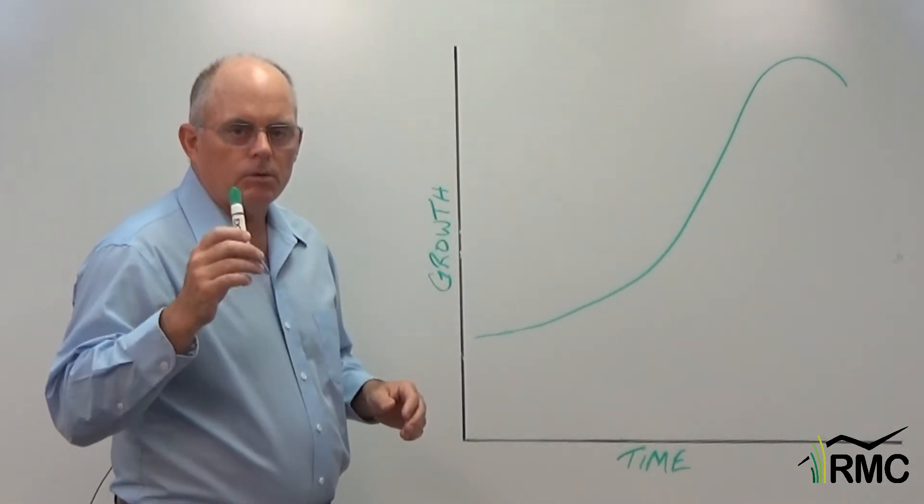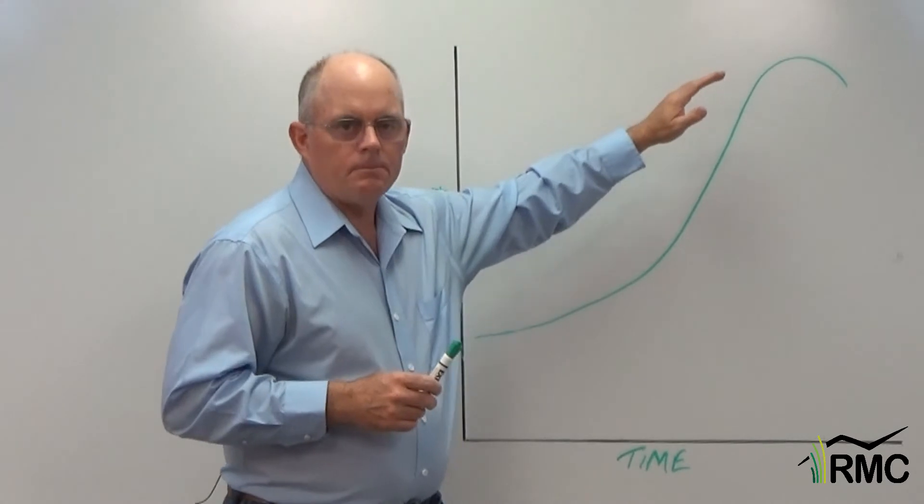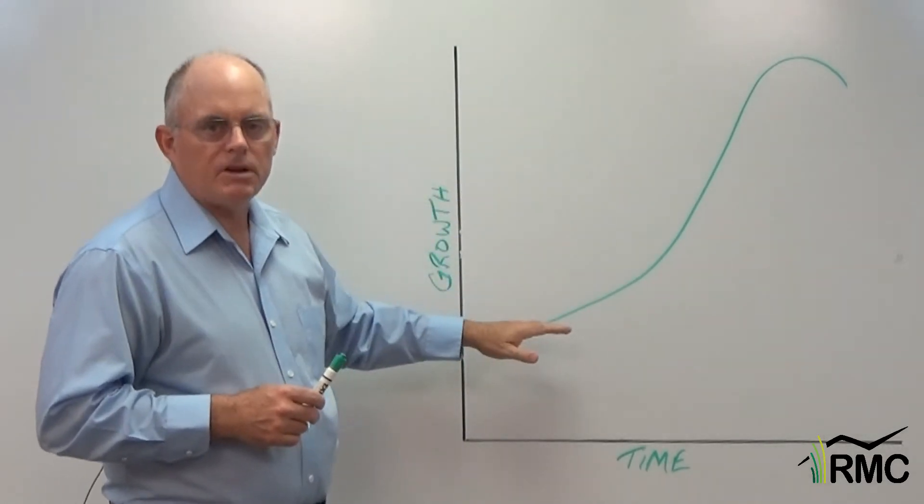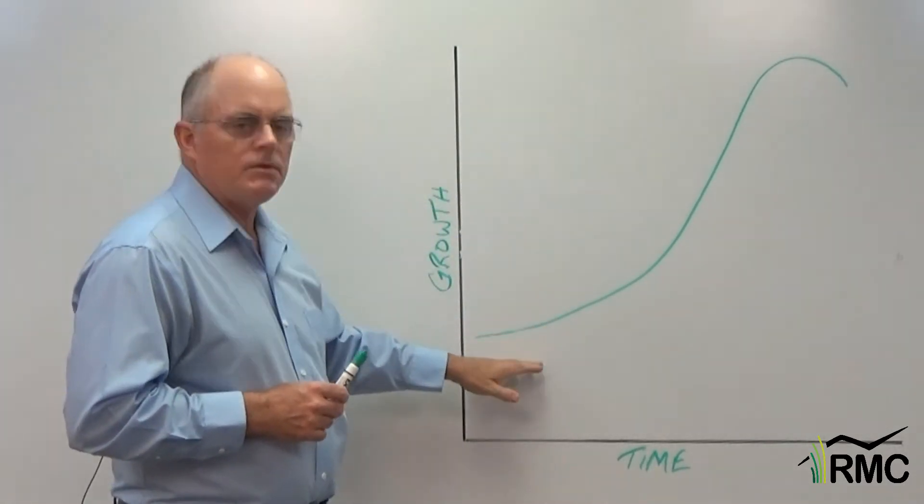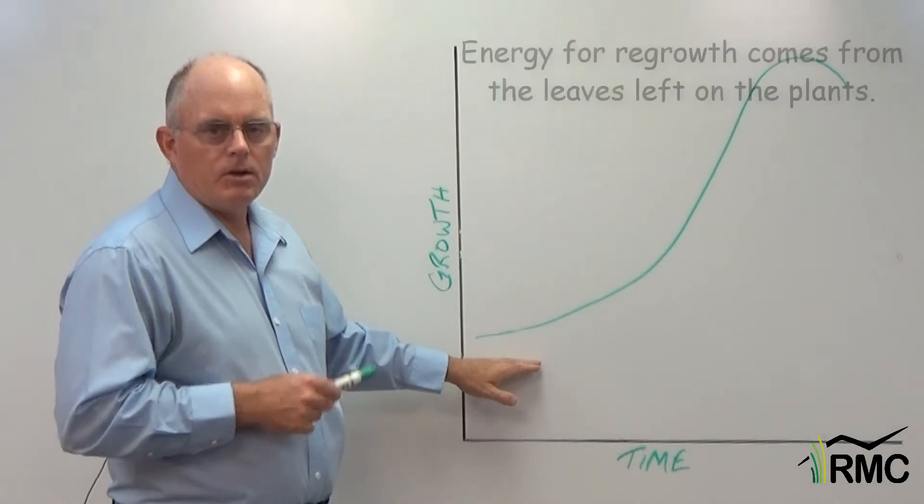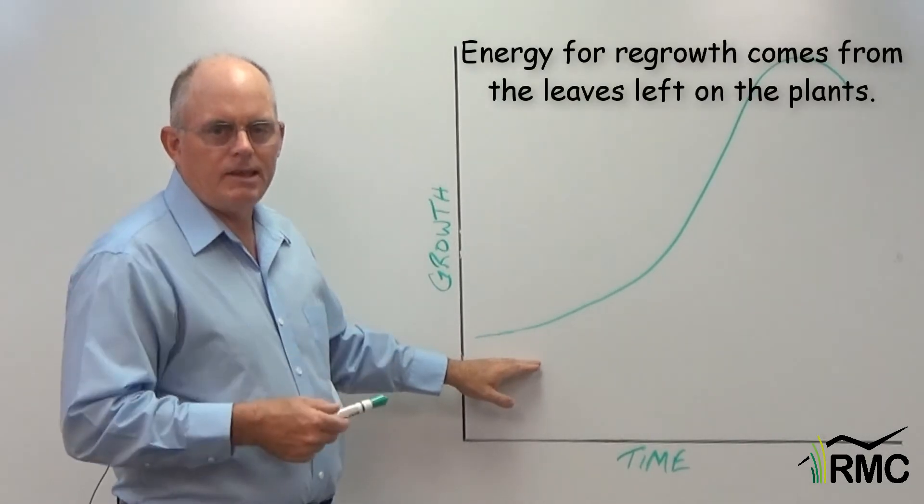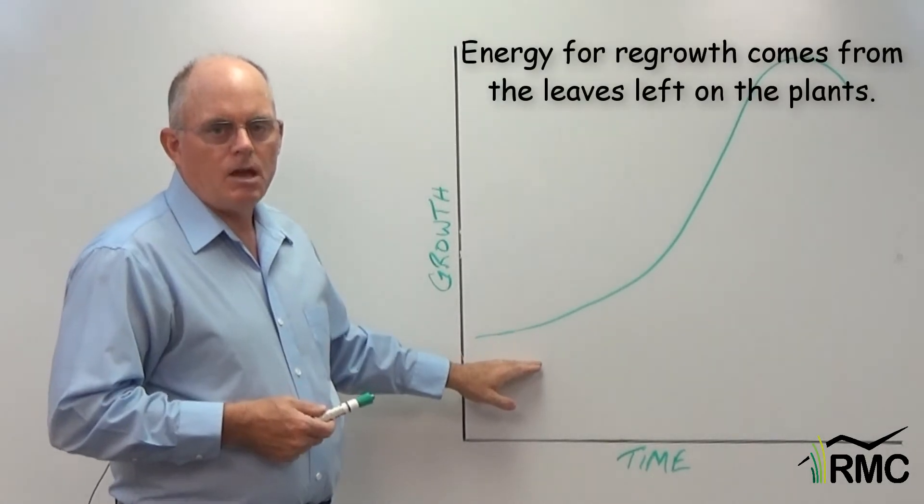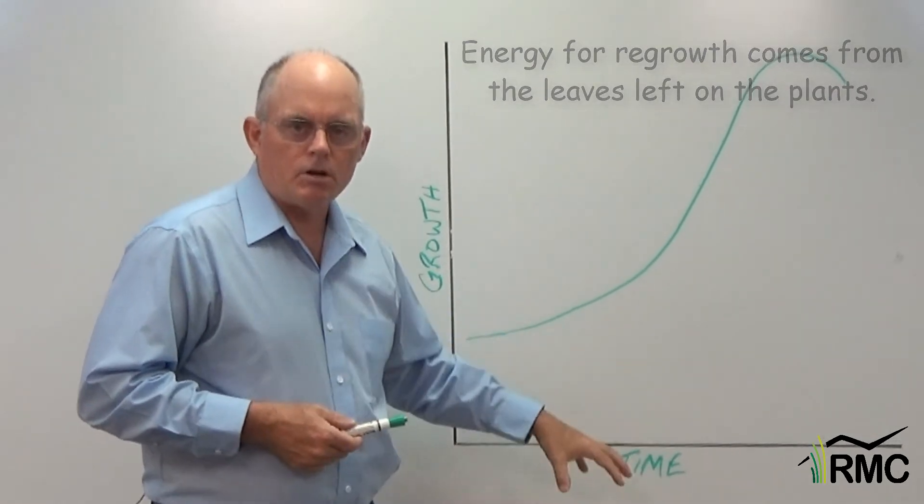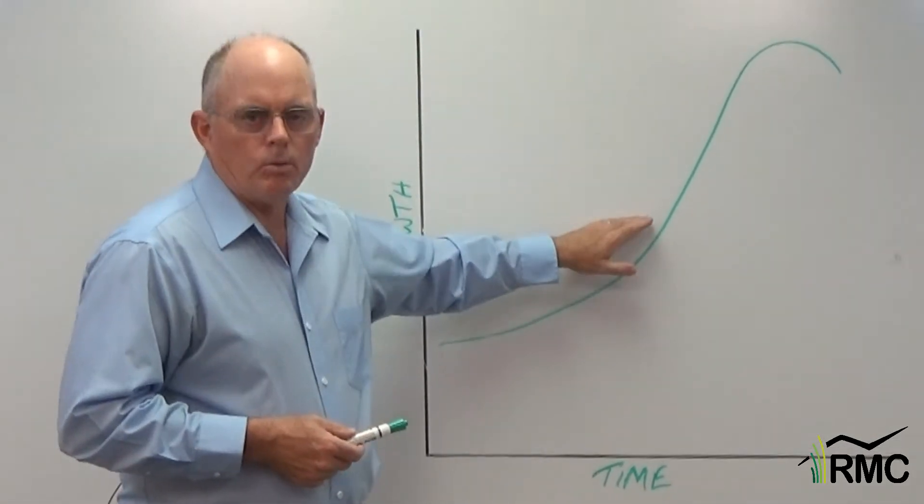When plants are grazed their recovery tends to follow an S pattern. After a plant's been grazed its growth is relatively slow, especially if it's been grazed severely. Energy for this regrowth comes from whatever leaves are left to capture energy. Now as leaves grow a little more and roots start to recover plants will start to grow more rapidly.